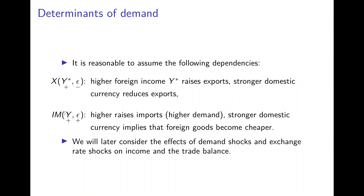Imports depend positively on domestic income. If households have a higher income at home, they demand more goods produced abroad, so imports rise with income. Imports also rise with the exchange rate: if the domestic currency is strong on the world market, goods produced in the rest of the world become cheaper, leading to an increase in imports. We will later consider the effects of demand shocks abroad and at home, and of the exchange rate, on income and on the trade balance in an open economy.